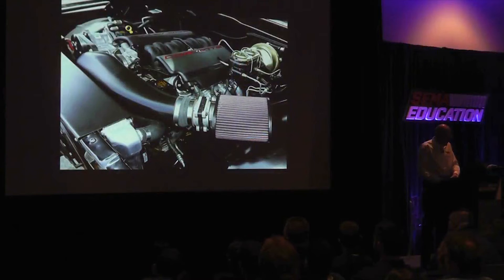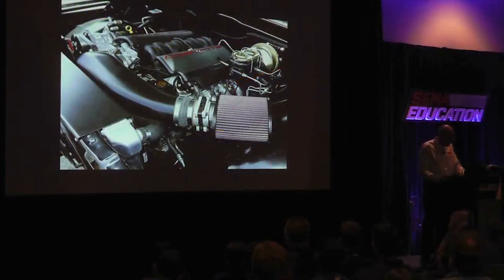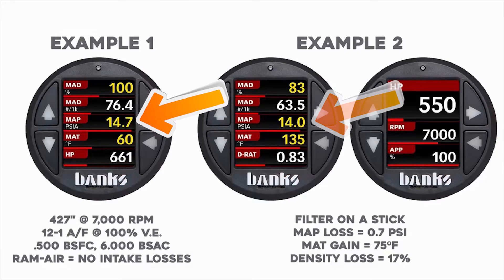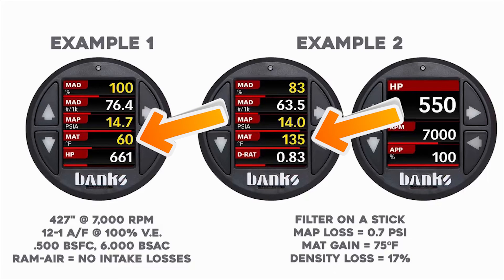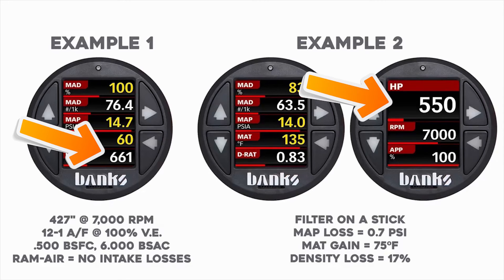That's a nice little 427 naturally aspirated. Wait a minute — this guy put his air filter under the hood. What is he thinking? You read the magazines all the time and you see pictures like this. Now he's got the filter under the hood. Must be a low restriction, huh? That filter on a stick has a map loss of about 7 tenths of a pound — that's filter drop. But the air going into it is 135 degrees instead of 60. So instead of 661 horsepower, we're now making 550. Pure jackassery.